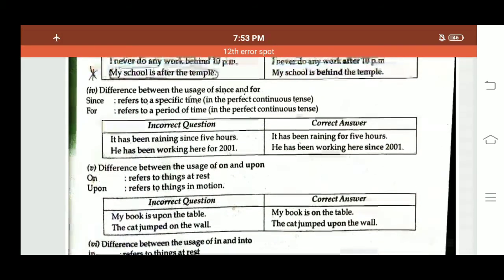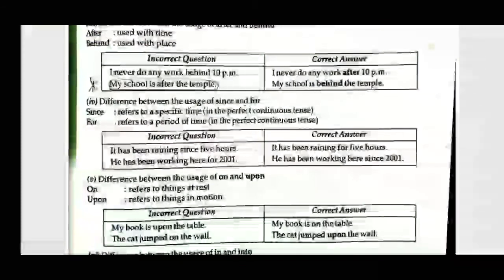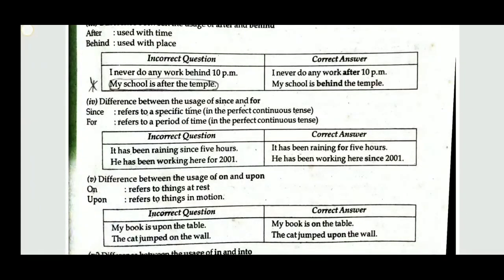Difference between 'on' and 'upon': 'On' refers to things at rest; 'upon' refers to things in motion. 'My book is upon the table' is wrong — books are at rest, so correct is 'My book is on the table.' 'The cat jumped on the wall' is wrong — since the cat is moving, correct is 'The cat jumped upon the wall.'